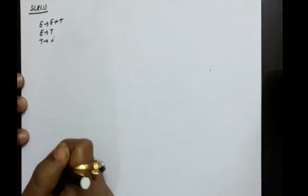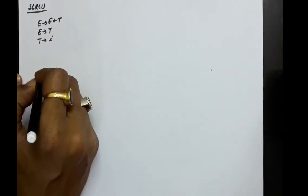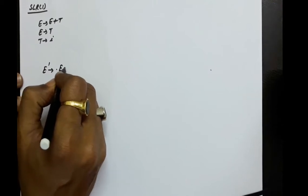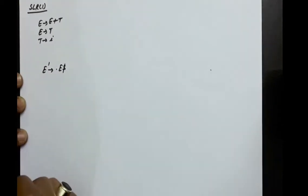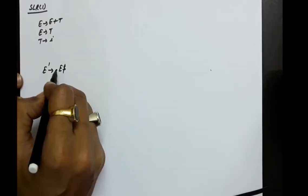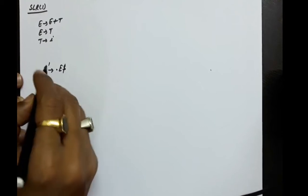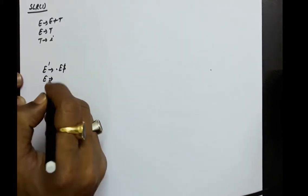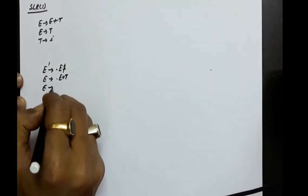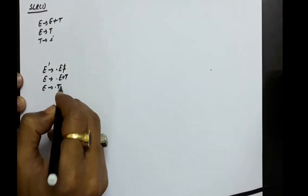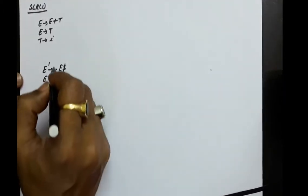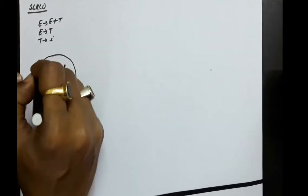We will first compute the canonical collection of LR0 items for this. First, find out the augmented grammar. So that will be E' → .E, which produces the start symbol, and after the start symbol there will be a dollar. After the dot, the non-terminal E appears, so we take the closure. So E → .E+T and E → .T. After the dot there is a non-terminal T, so all productions starting with T have the dot at the beginning. This is state number 0.